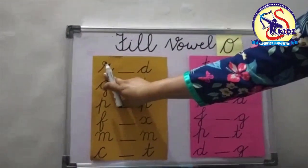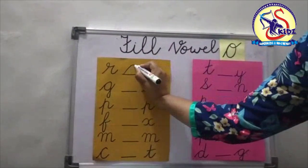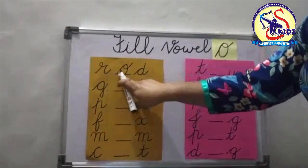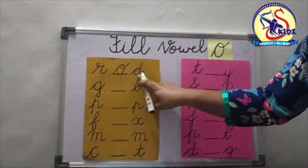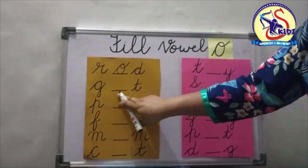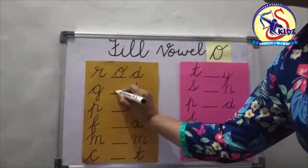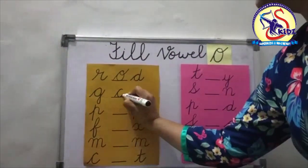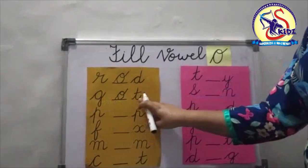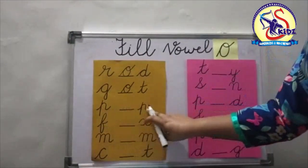Now first: R blank D. We will write O in the blank. Now R-O-D, rod. Now see the next: G blank T. Again we will put O in the blank and we will get the word G-O-T, got.